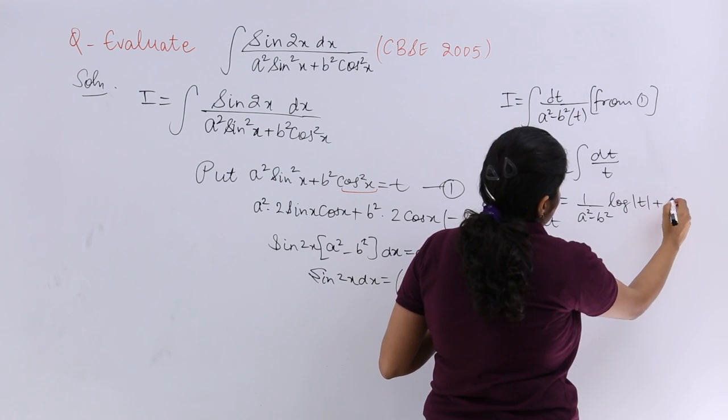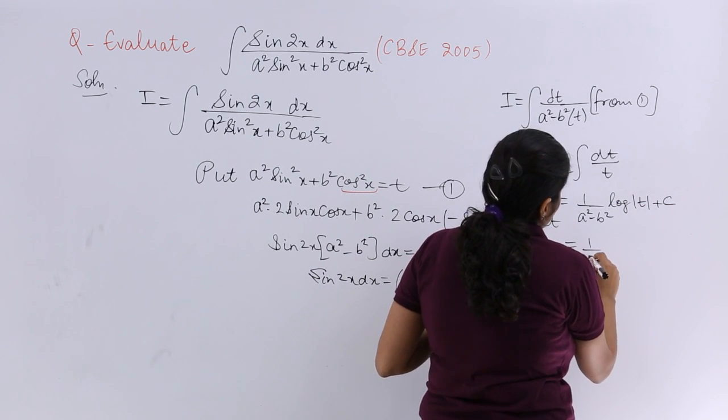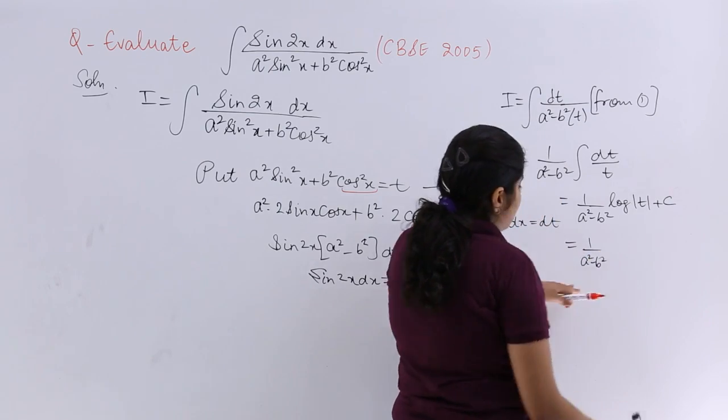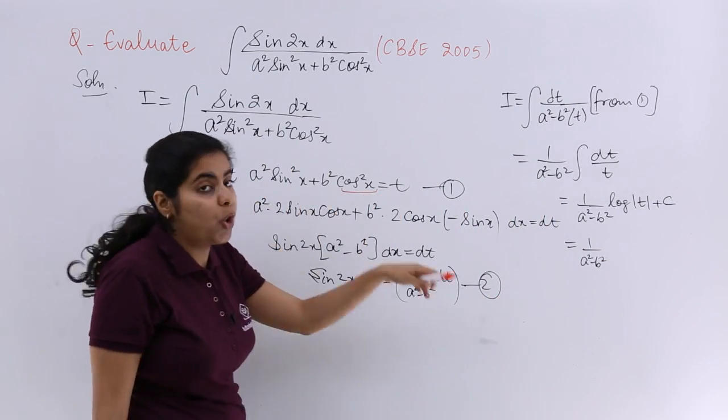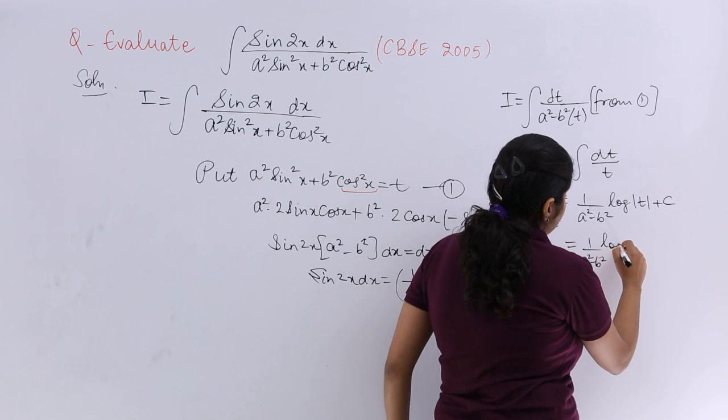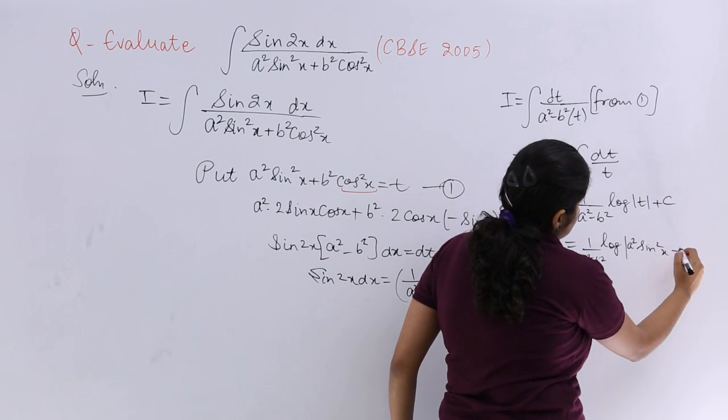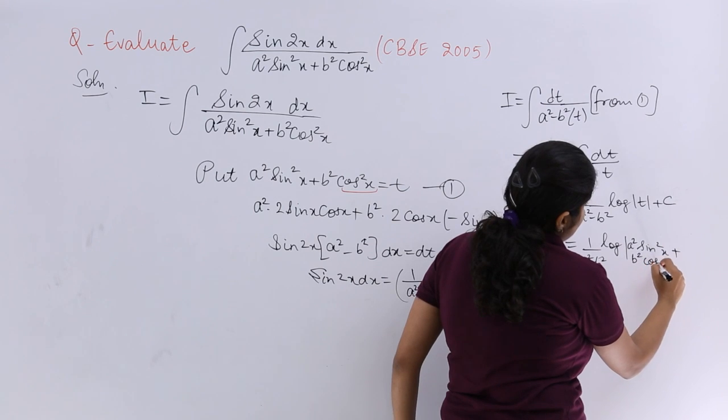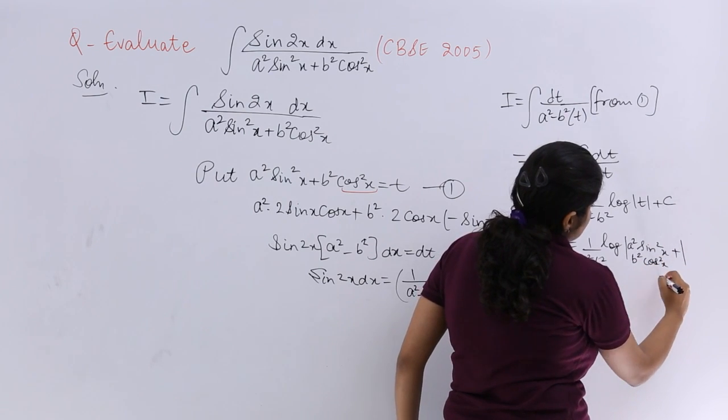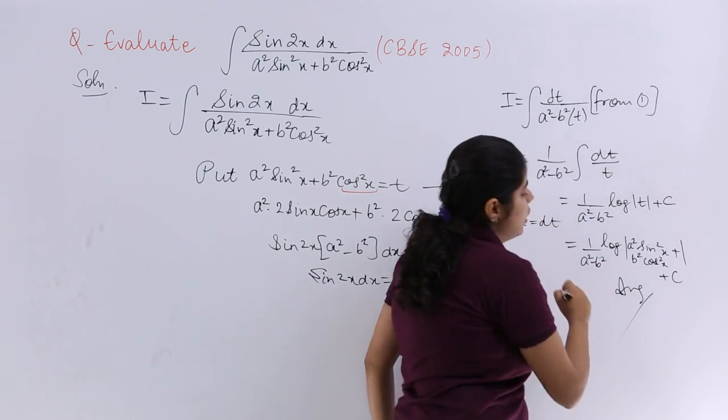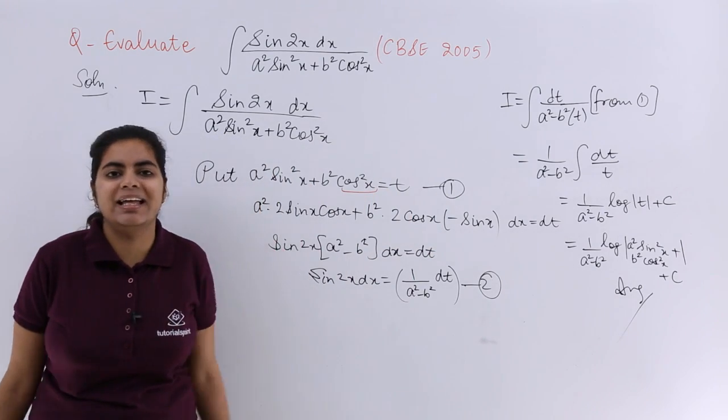And what is the value of 1/t that you can already put? So the answer becomes 1/(a² - b²) log the whole thing. Log(a²sin²x + b²cos²x) + c, which is the constant of integration, and that is the answer.